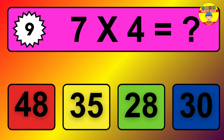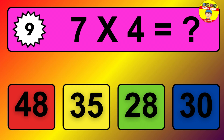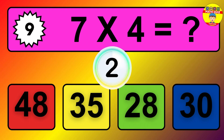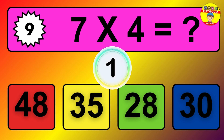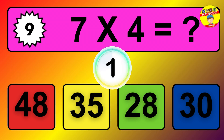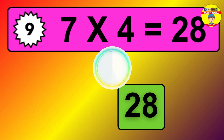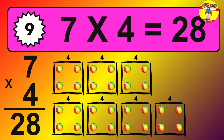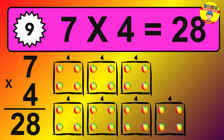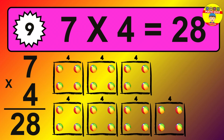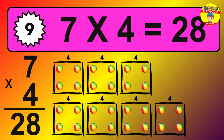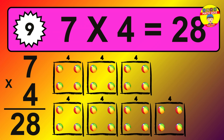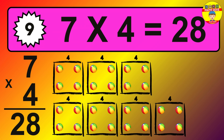Question 9. 7 times 4 equals what? The answer is 7 times 4 is 28. To calculate, we have 7 groups with 4 balls each one. So, how many balls do we have? 28 balls.